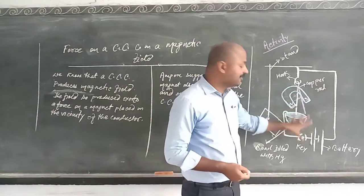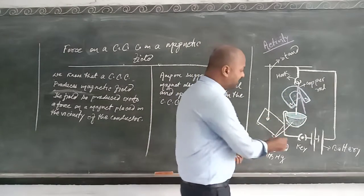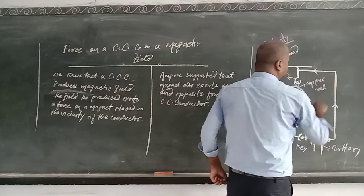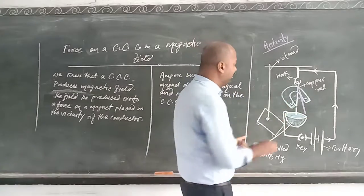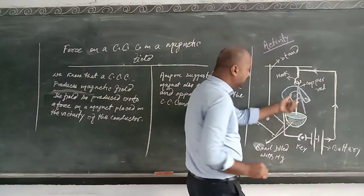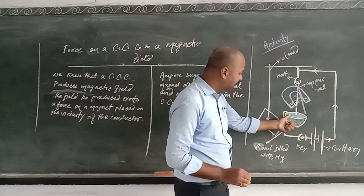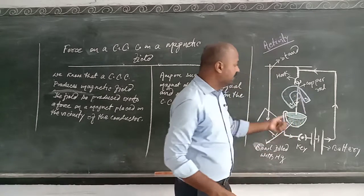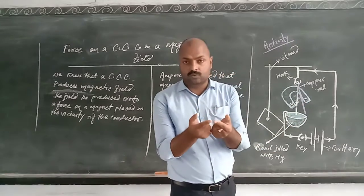It becomes a complete closed circuit, and when electricity flows through this conductor — as you know, electricity flows from the positive terminal to the negative terminal — so when electricity flows through this metallic rod, this metallic rod produces a magnetic field around it.